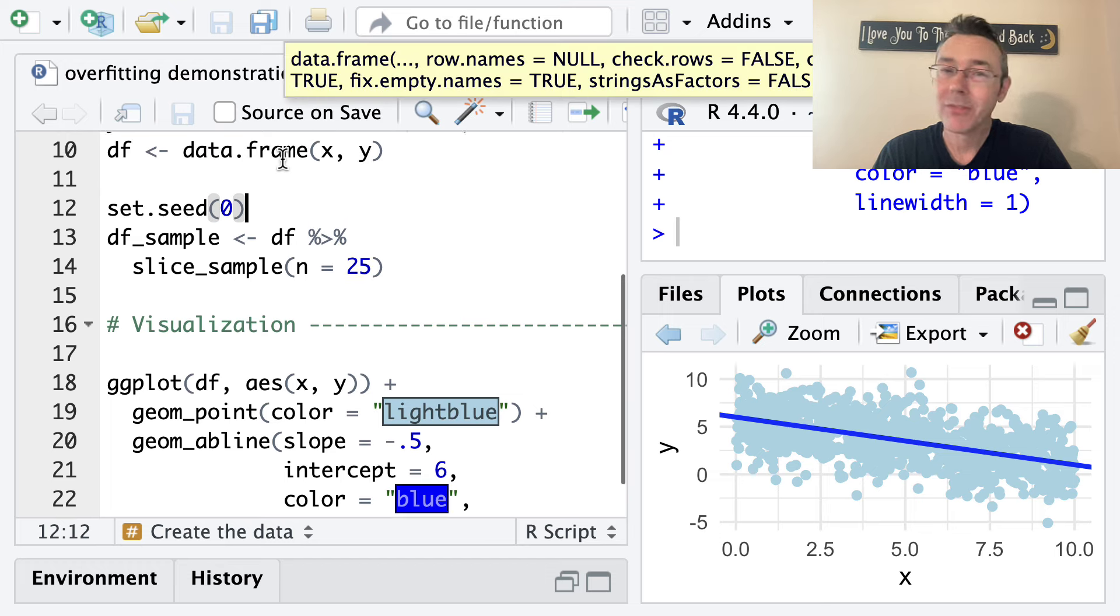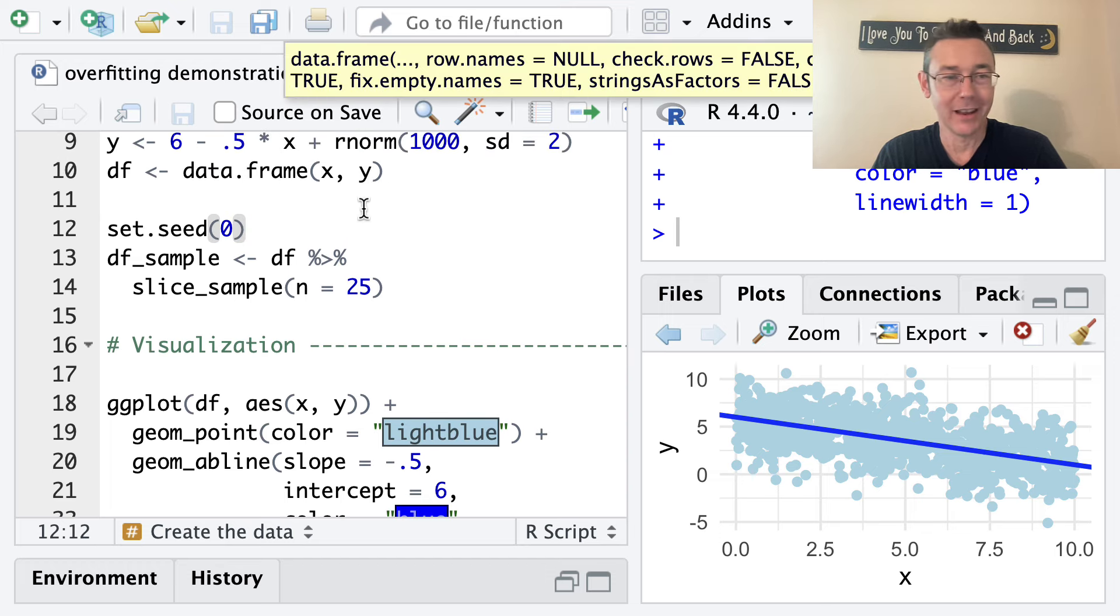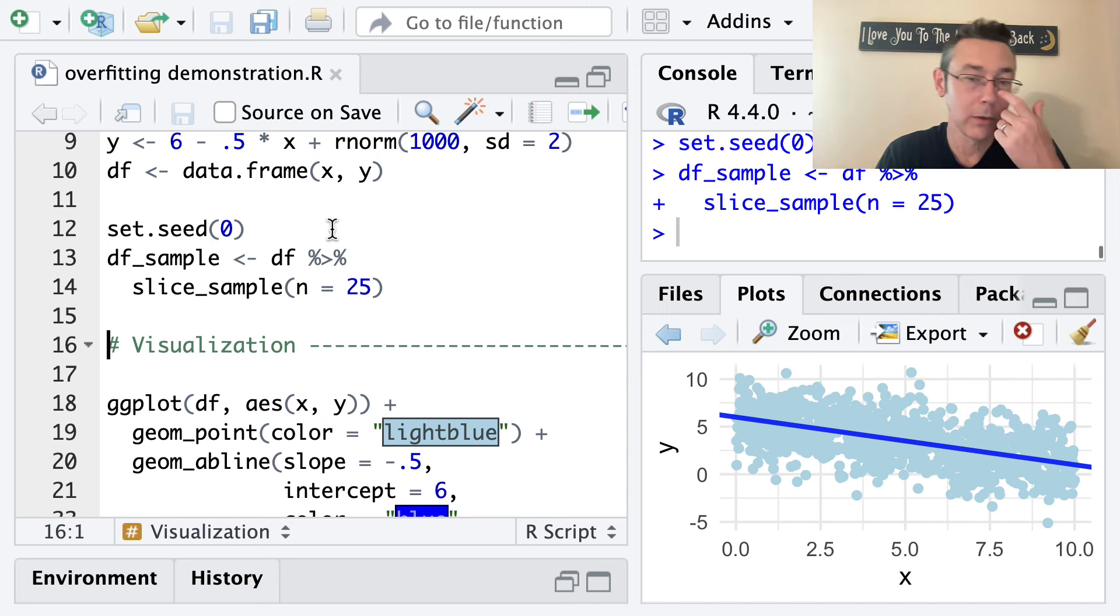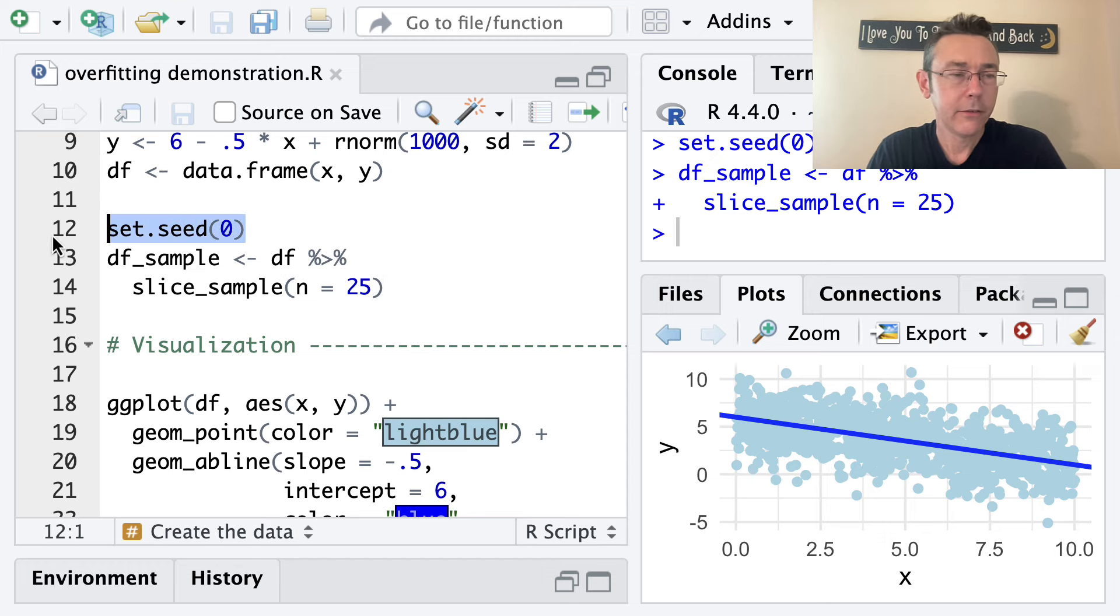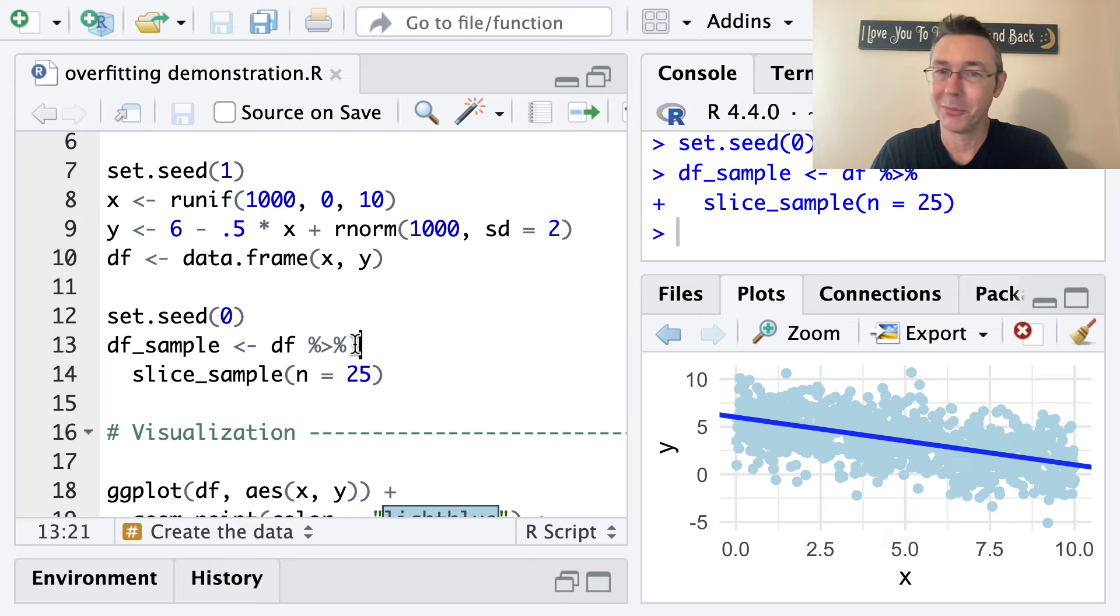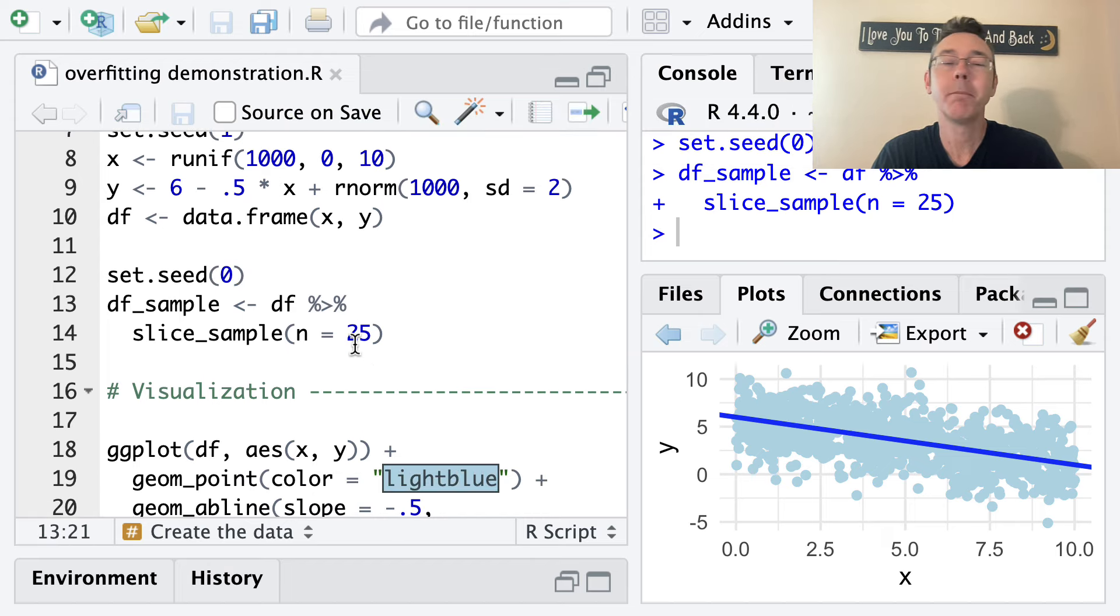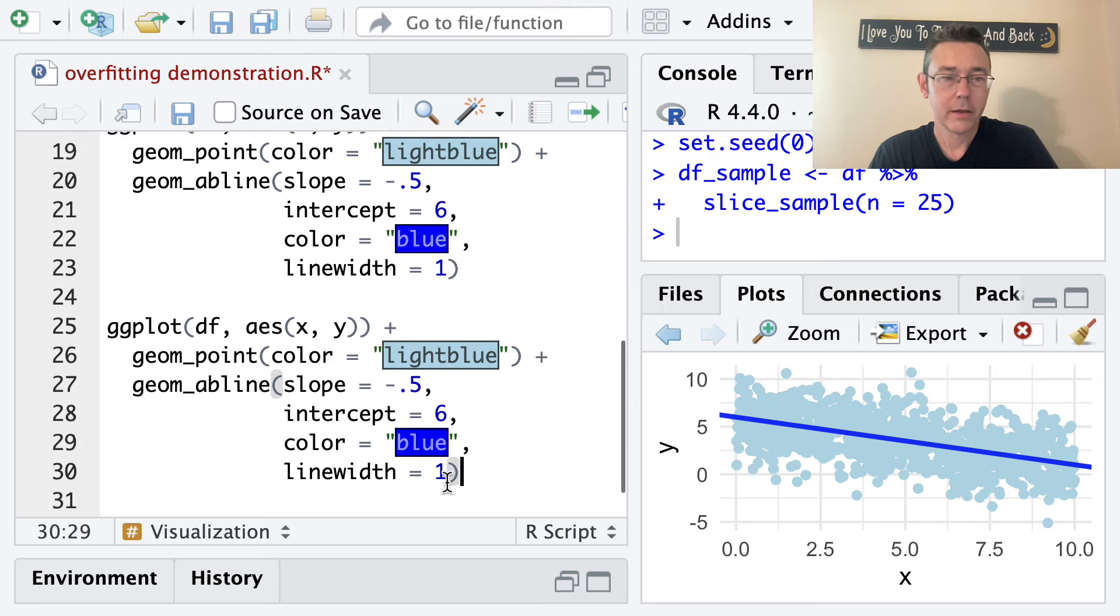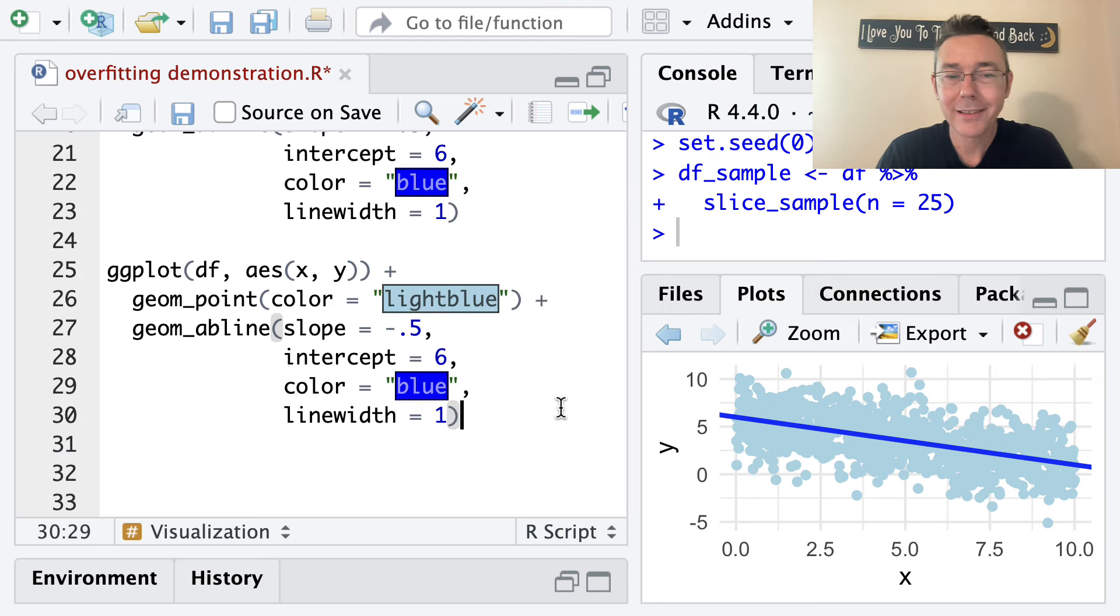You only have access to a random sample, you're trying to draw conclusions about this population. So what I'm going to do here, recognizing that this population data is not something we generally have access to, is to actually get a random sample. And so these next few lines are getting a random sample of size 25. I've set seeds both for this and my initial randomization so that everything is reproducible.